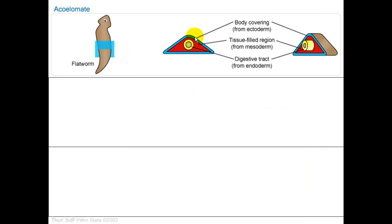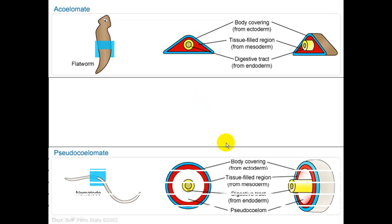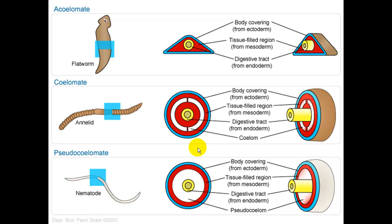Here's a picture of an acoelomate — you can see it's solid and there is no body cavity. Here's a pseudocoelomate, and as you can see, the pseudocoelom is not lined with mesoderm on both sides. On a coelomate, you have the mesoderm — shown in red — on both sides of the opening cavity.